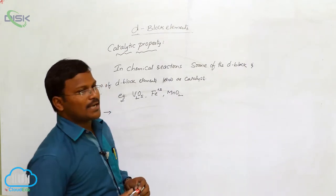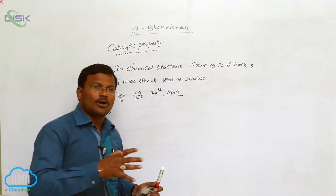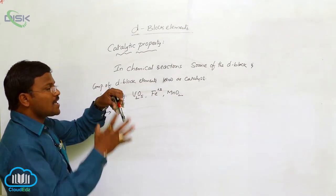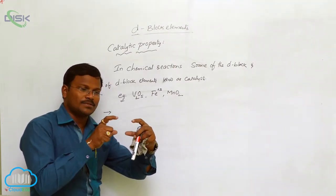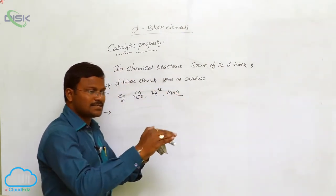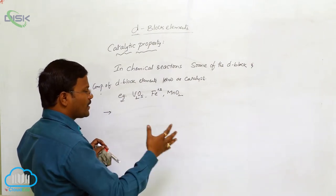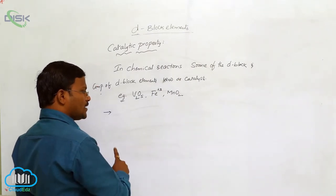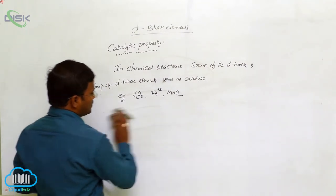During a catalytic reaction, reactant molecules are first adsorbed onto the catalytic surface. Upon adsorption, the bond strength in the substrate molecules is weakened, allowing them to be more easily converted into products with less activation energy. The presence of a catalyst decreases the activation energy of the reaction, enabling easier conversion of reactants into products.